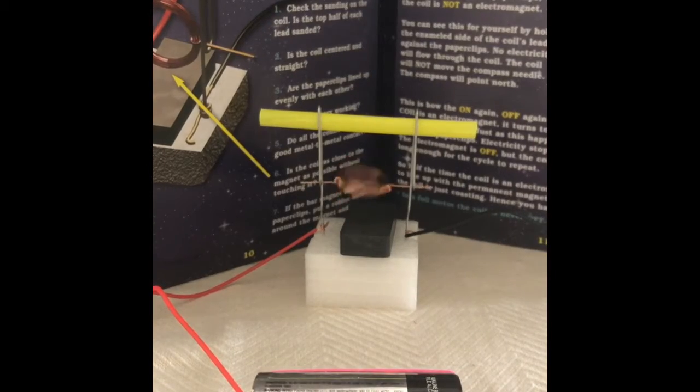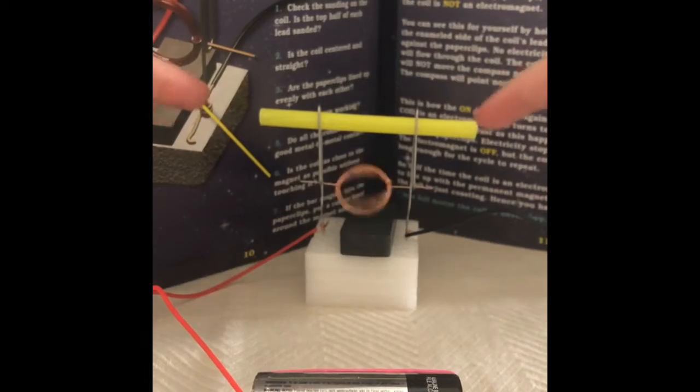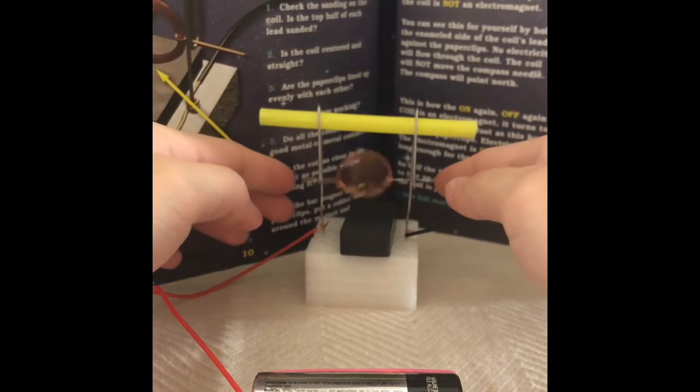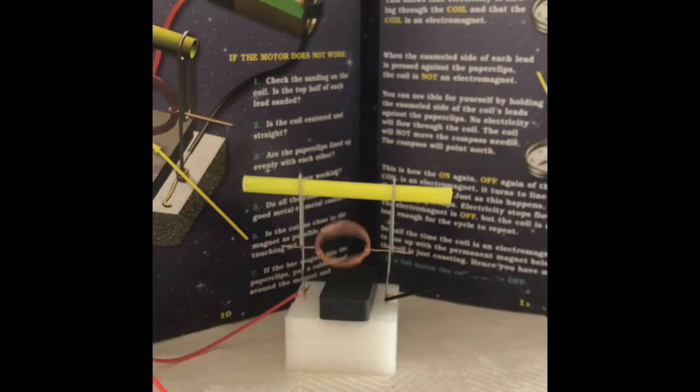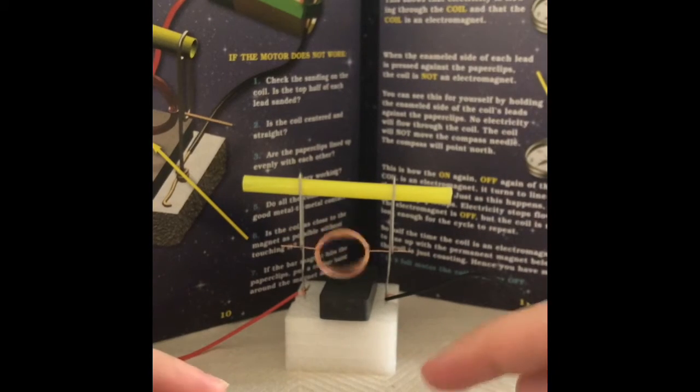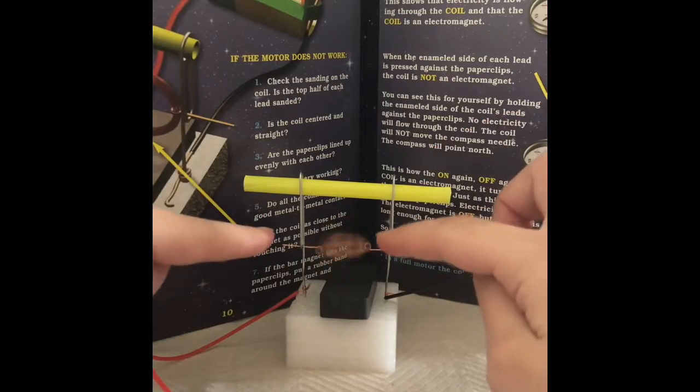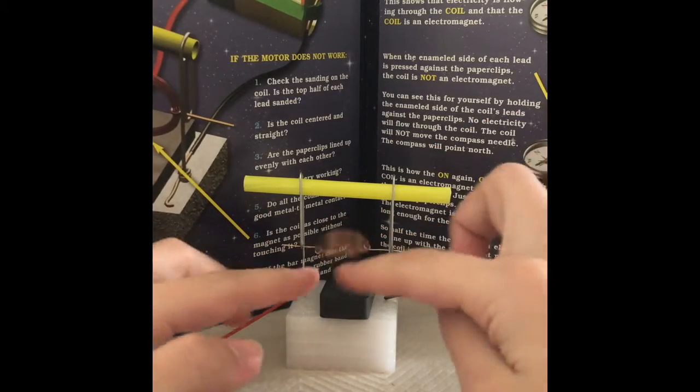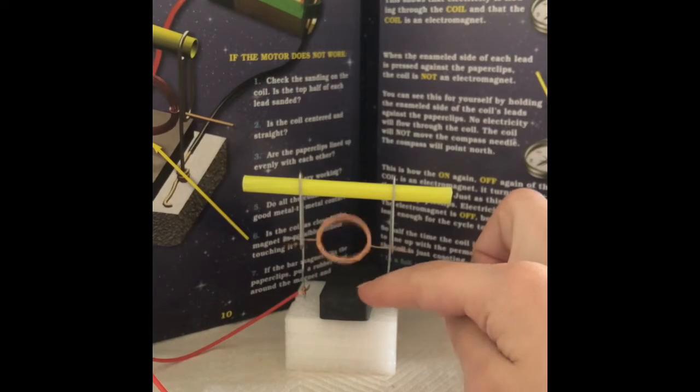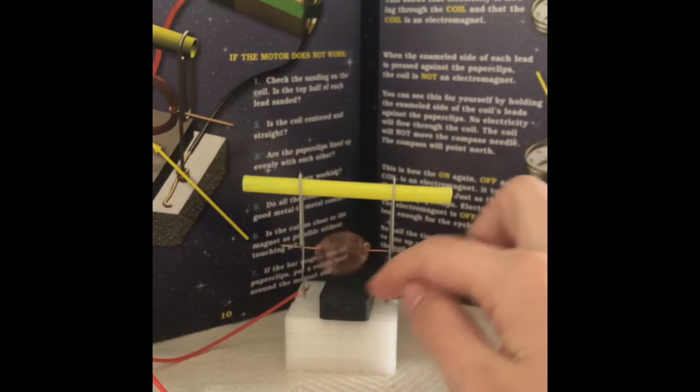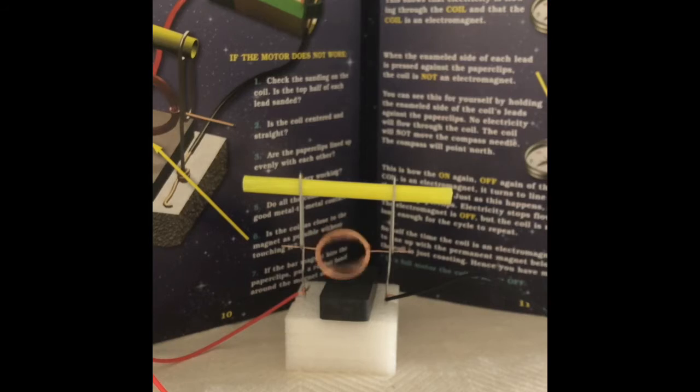A magnetic field is created when an electrical charge is in motion, which we can tell by the spinning coil. Electricity goes through this battery into the coil. So this electrical field that was created tries to align with the magnetic field, which is the big magnet here. So when the coil tries to align with the big magnet, it actually pushes the coil over.